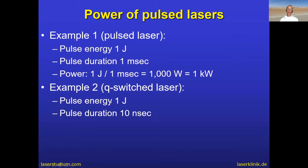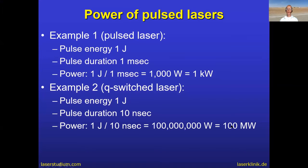Using the same formula for the Q-switch laser: it's also one joule, but with a duration of only 10 nanoseconds. The result is unbelievable — 100 million watts, or 100 megawatts. For example, these lasers are used for tattoo treatment. So you are putting 100 megawatts onto the skin of a patient — and why it does not burn, you will see.